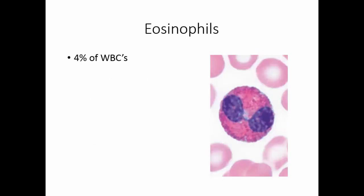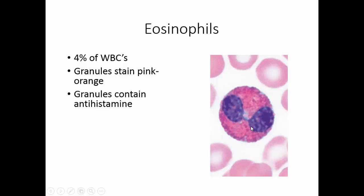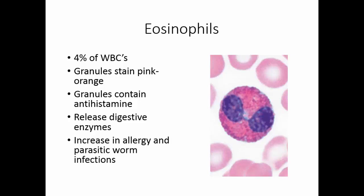Eosinophils make up about 4% of circulating white blood cells. Their granules stain a pink or orange color and contain antihistamine — the same material you can take for an allergic response — as well as digestive enzymes. Eosinophils increase in number during an allergy to combat histamine effects, and because of their digestive enzymes, they are also effective at defending against certain parasitic worms.